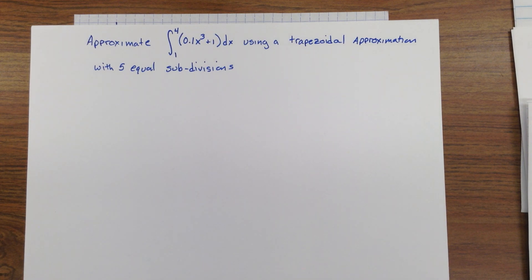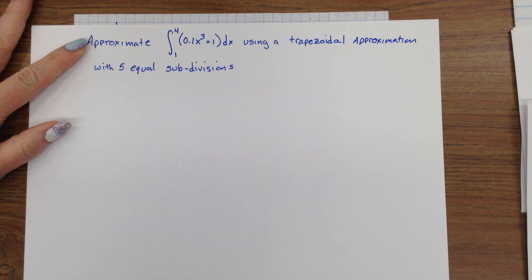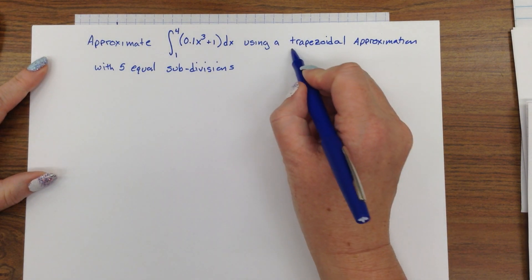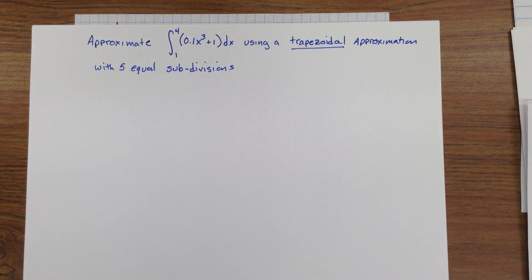All righty then, corn children, children of the corn. It is a fine day for mathematics, and today we are going to be approximating an area using a trapezoidal approximation with five equal subdivisions. I know, it just sounds like fun.